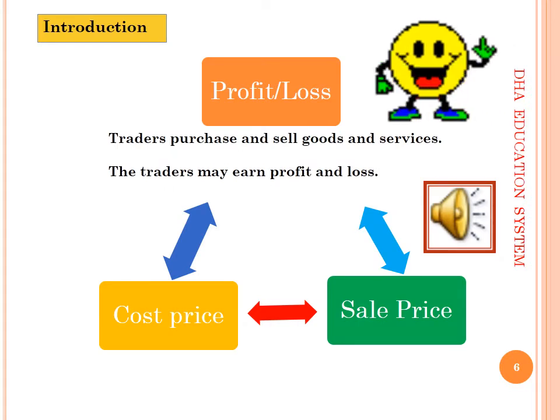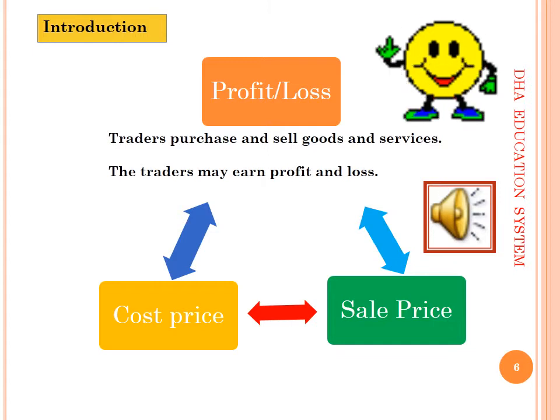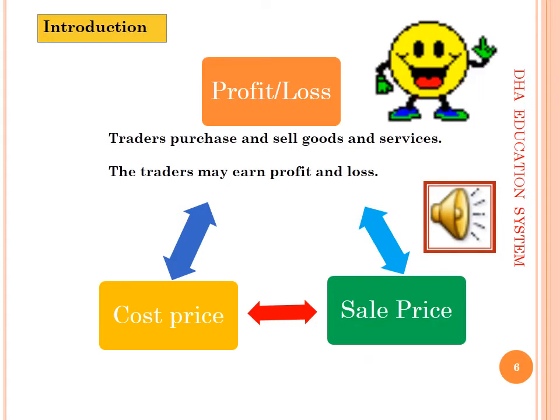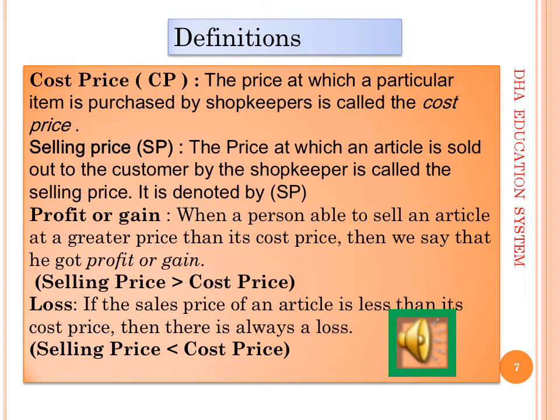In profit and loss, a trader purchases and sells goods and services, and may earn profit or incur loss. You need two key relations: cost price and sale price. Cost price is the price at which an item is purchased by the shopkeeper. Selling price is the price at which an article is sold to the customer. If selling price is greater than cost price, there is profit; if less, there is loss. Learn these definitions carefully, as objectives can be asked from them.